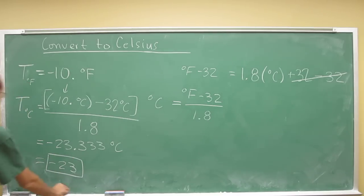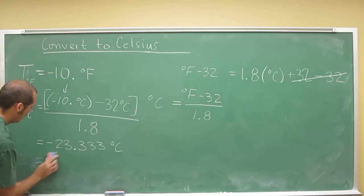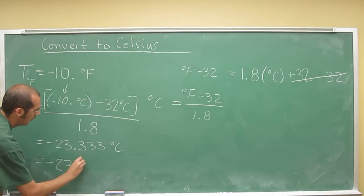And we've got to put units on it, too. So, negative 23 degrees Celsius.